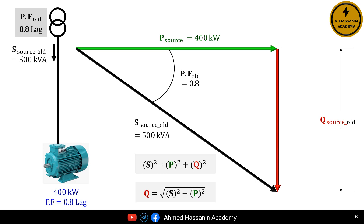We know that the square of the total power S is equal to the square of the active power P plus the square of the reactive power Q. Therefore, the reactive power Q is equal to the square root of the square of the total power S minus the square of the active power P.